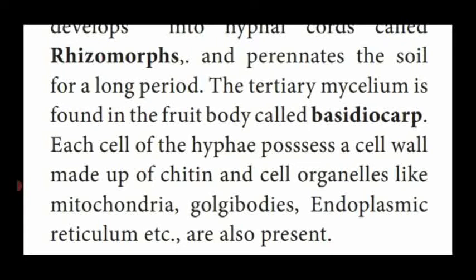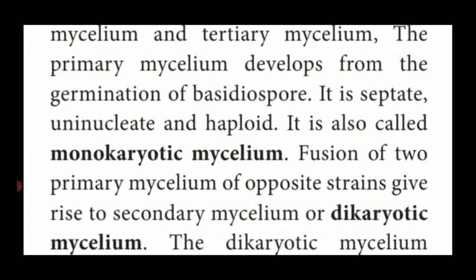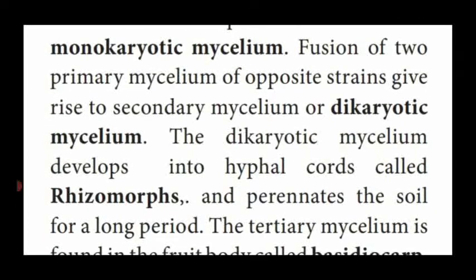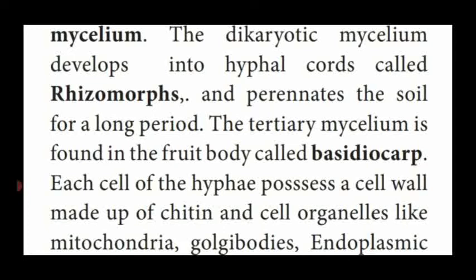Primary mycelium is produced from the basidiospore, which is septate, uninucleate, and haploid — named monokaryotic mycelium. Fusion of two primary mycelium with uninucleus produces the diploid secondary mycelium, named dikaryotic mycelium. This dikaryotic mycelium produces a hyphal cord known as rhizomorph, which penetrates into the soil and lives for a long period.